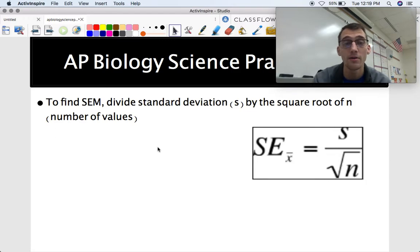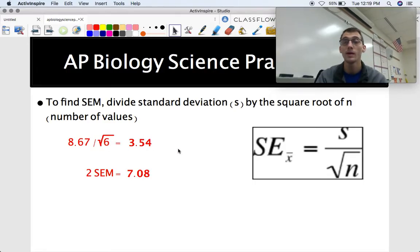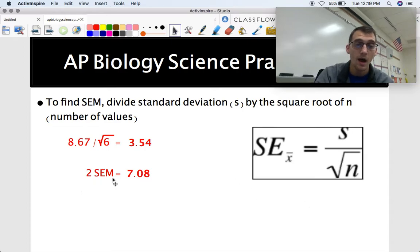So in order to find standard error of the mean, which is what we're going to be graphing here in a second, you divide your standard deviation by the square root of N, or number of your values. And this is the easy part. We already calculated standard deviation, 8.67, divided by the square root of 6, and we get 3.54. And two standard error of the mean, like what we saw in that data table, it's just two times this, standard deviation divided by the square root of N. So two standard error of the means for us, for this data point, would be 7.08.